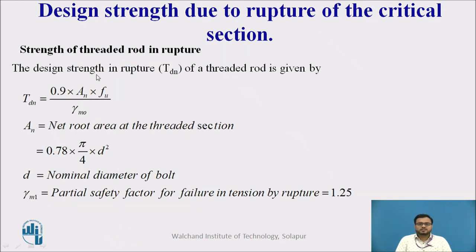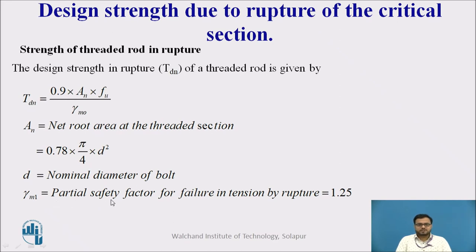For the threaded section, TDN = 0.9 · AN · Fu / γM1, where AN = 0.78 · (π/4) · D², since the net area of a threaded section is less than π/4 · D². Here D is the nominal diameter of the bolt, and γM1 is the partial safety factor for failure in tension by rupture.